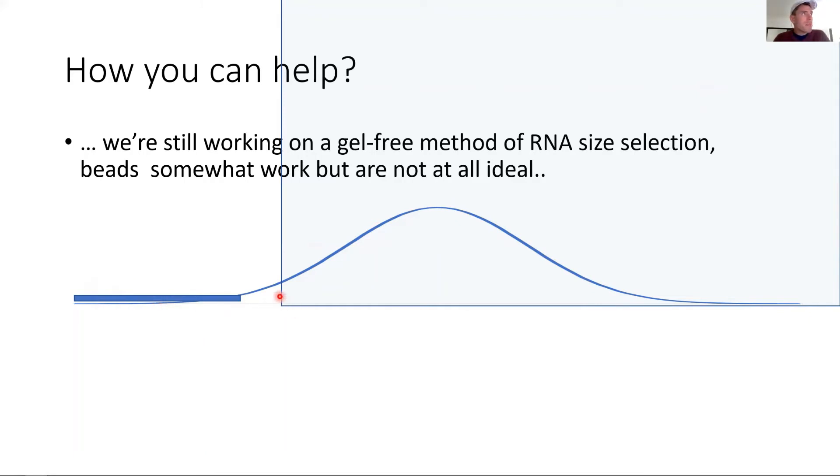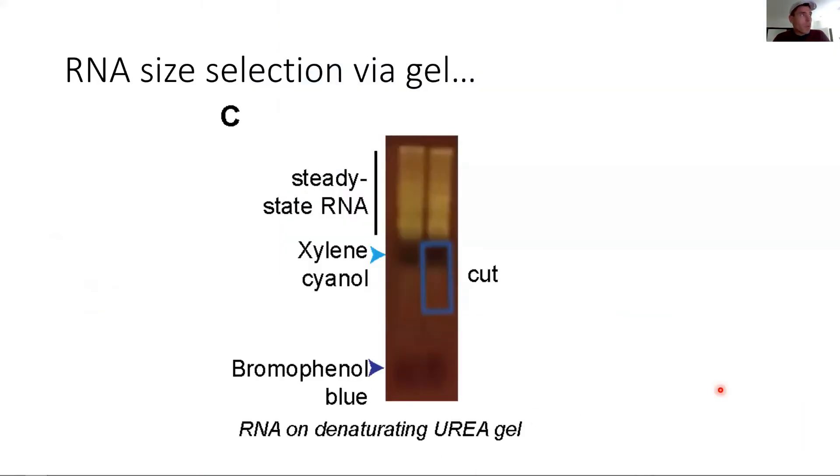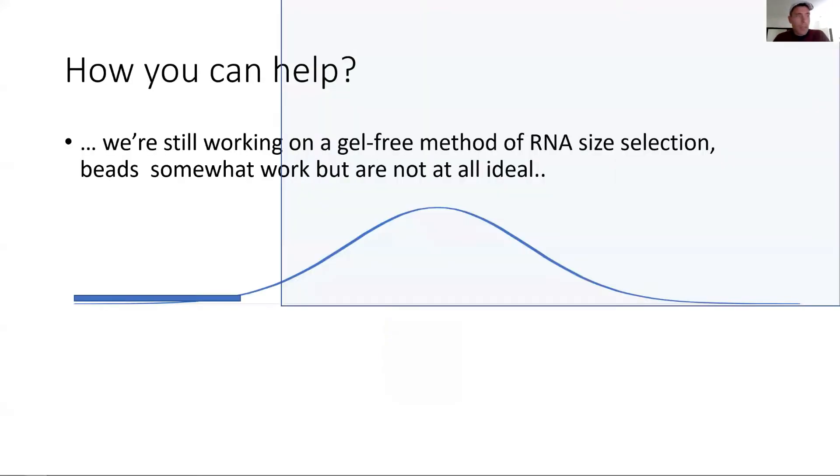The one thing we have to keep in mind is this is the small RNA that we're interested in, and then there's this edge, this massive amount—if you draw it to scale it won't even be on the screen anymore—of stuff that you don't want. As beads purify using these Gaussian distributions, even if you get 1% of what you don't want, if we look back this is so much more RNA, it will quickly quench your library.